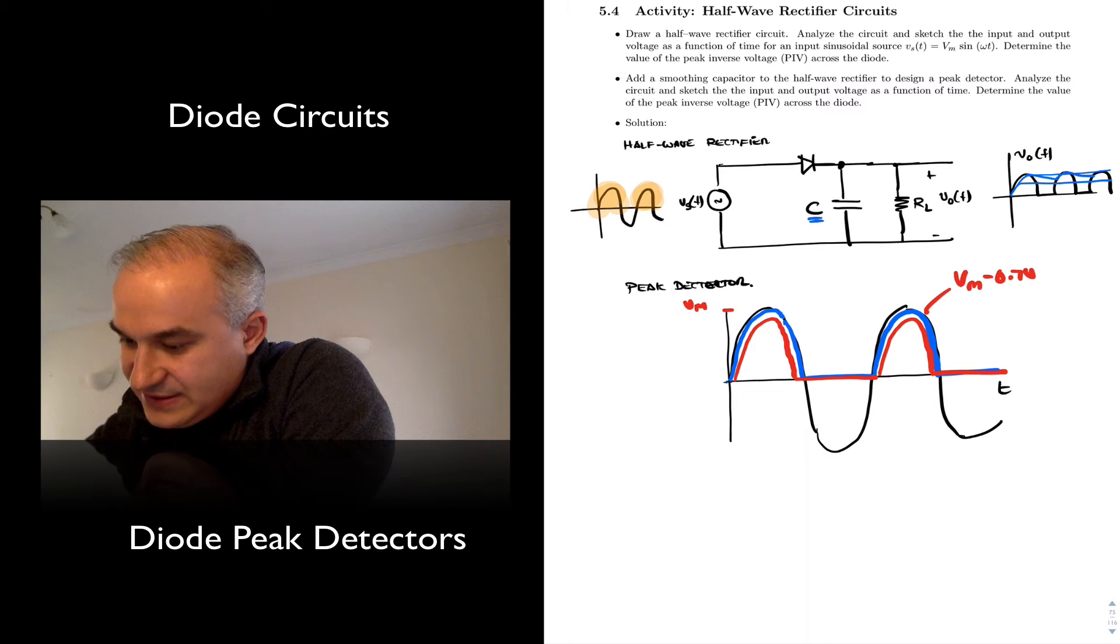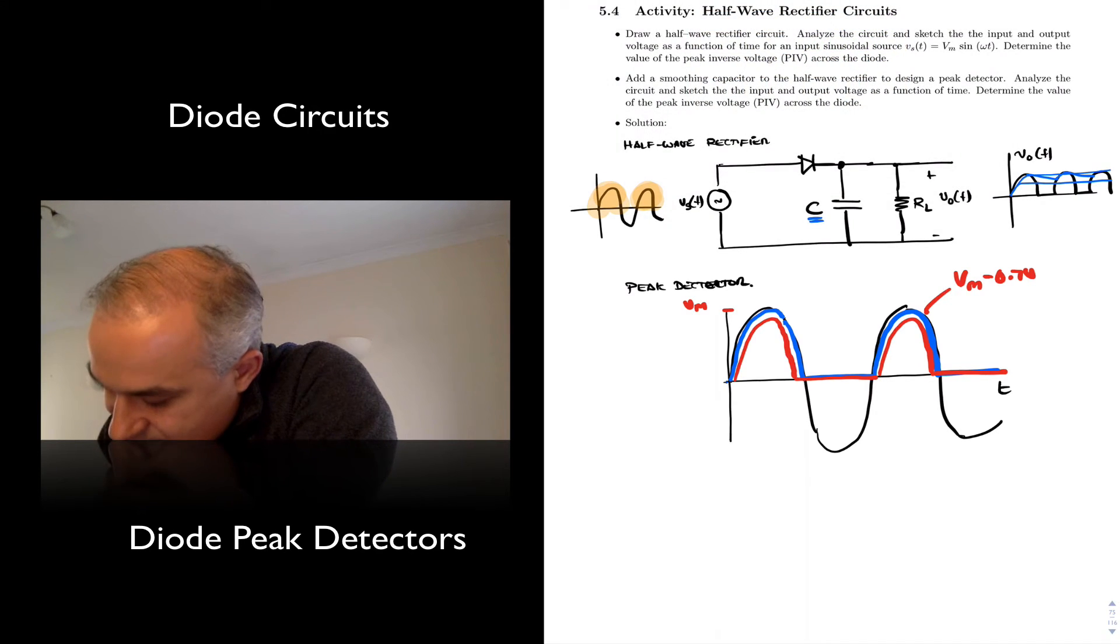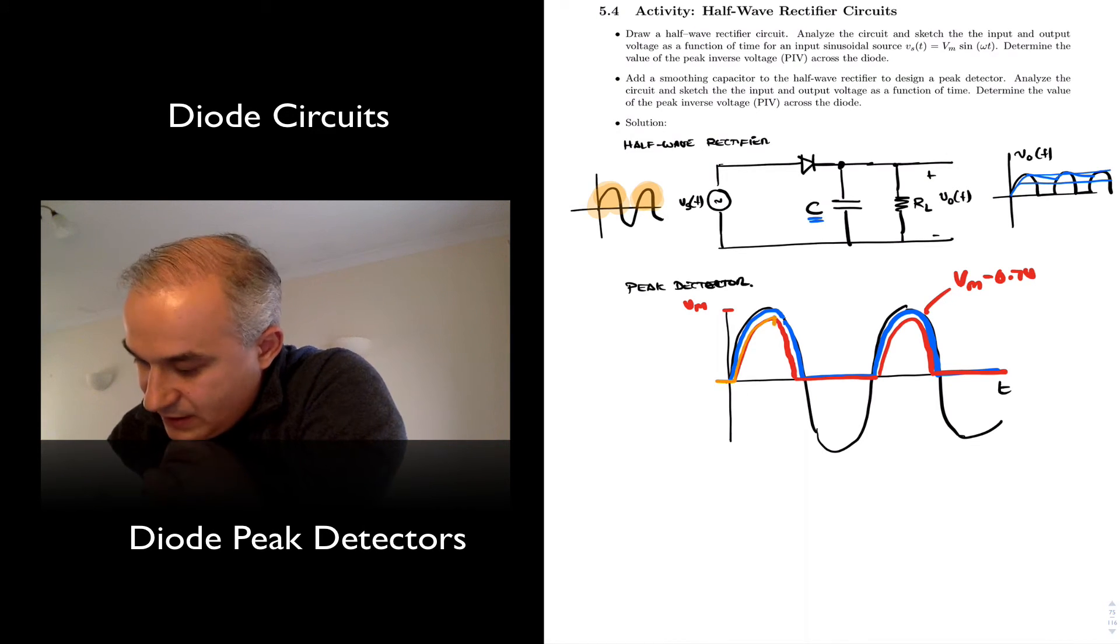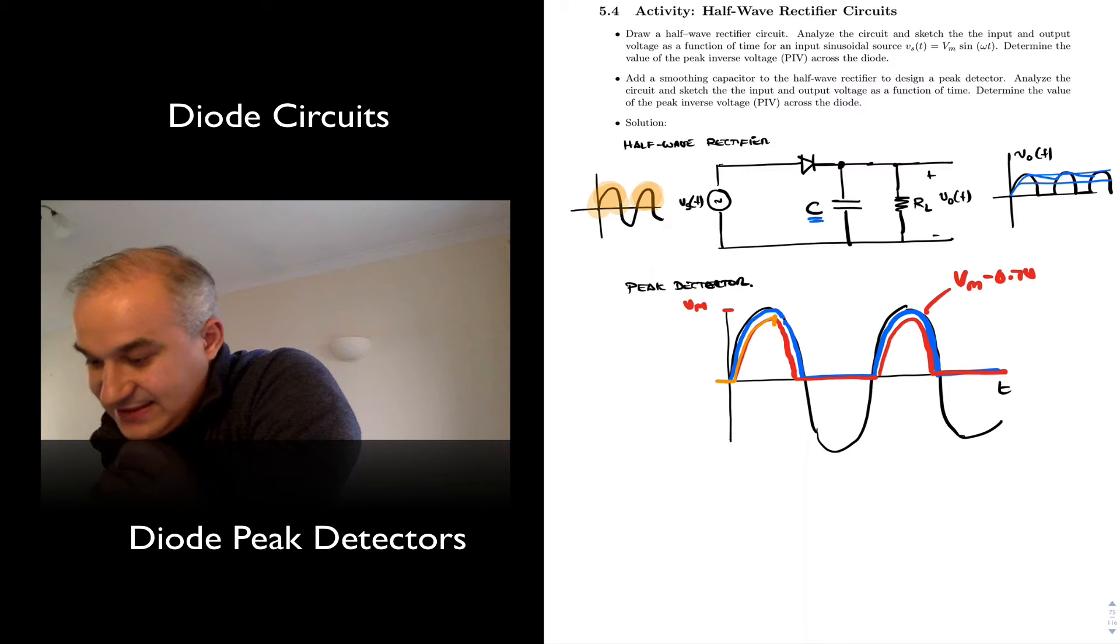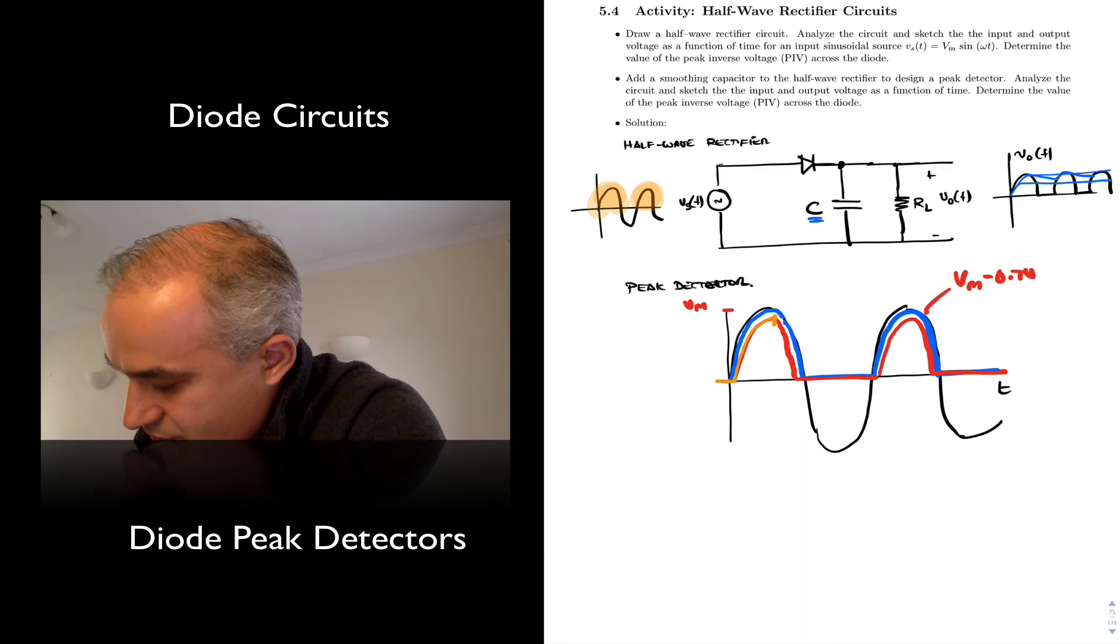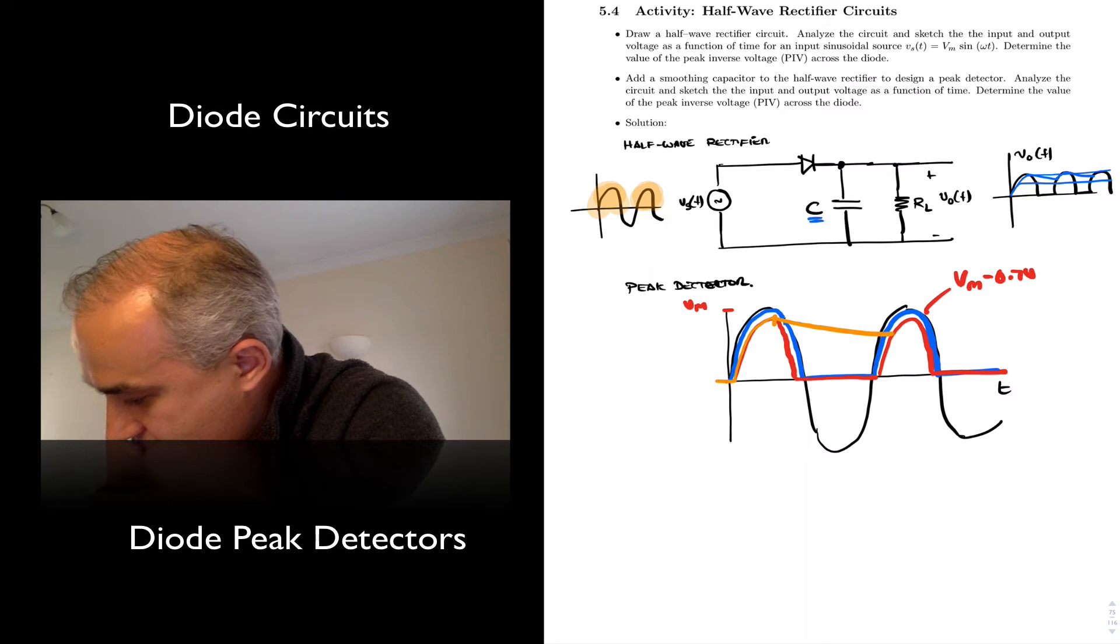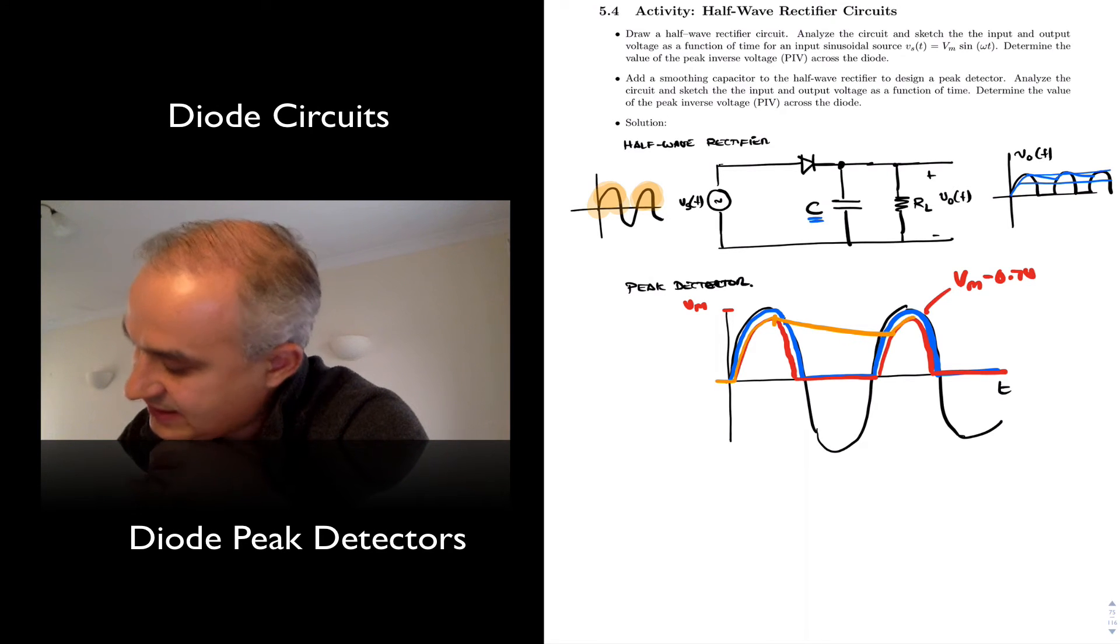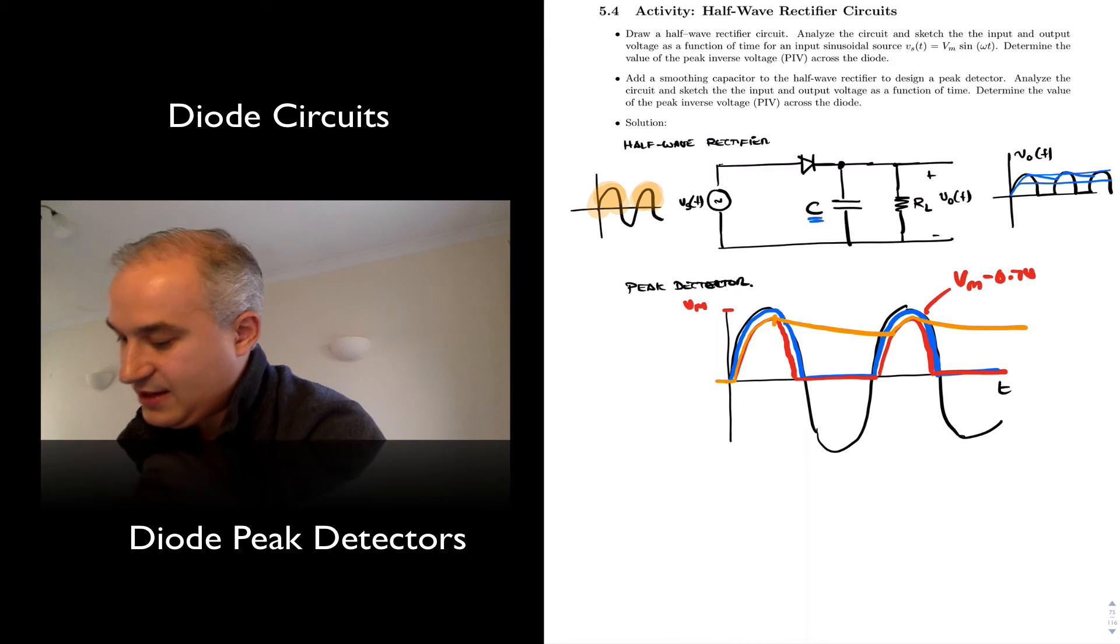With the capacitor, what we do is that the capacitor is going to charge during this period. And then when the voltage is less, it's going to discharge. So we have something like this. It detects the peak, so to speak. That's why we call it a peak detector.